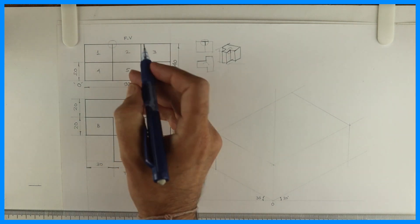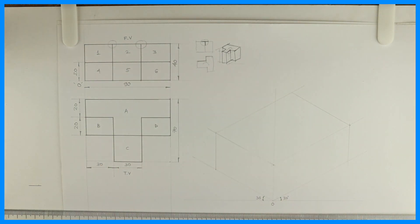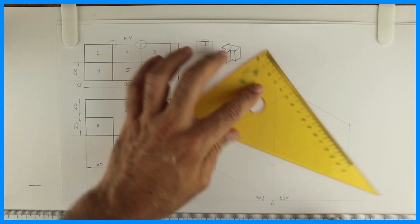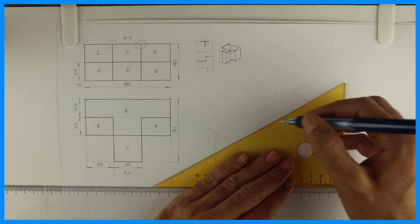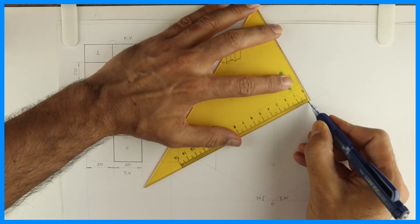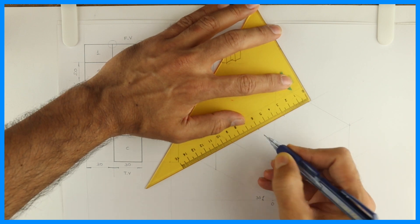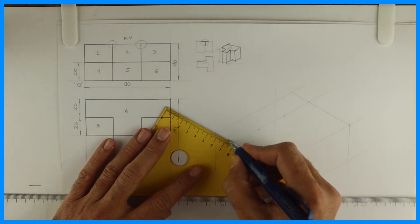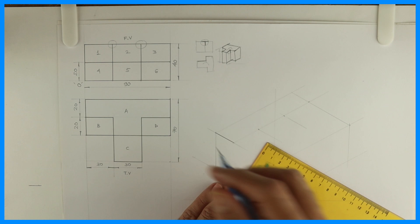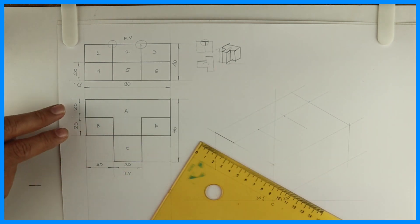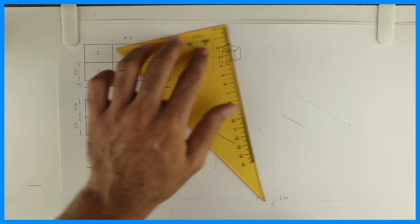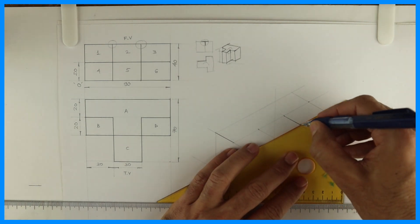So in this problem I will start with the top view and draw part A first. We have the T concept, so using this concept I am starting with the top view. I will take 20, then 30 on both sides — 30, 30, 30 — totaling 90. Then I will extend 20. This is 20, 20. So we got part A in the top view.